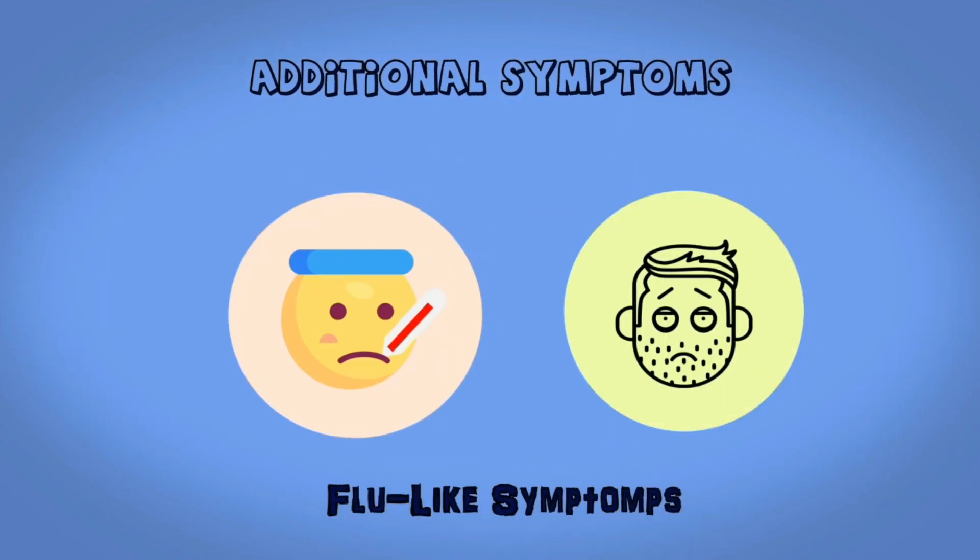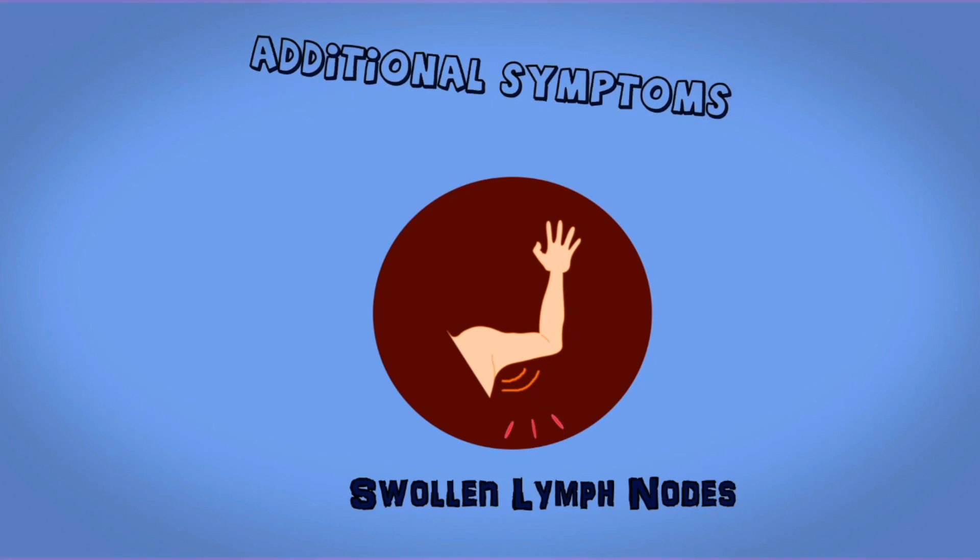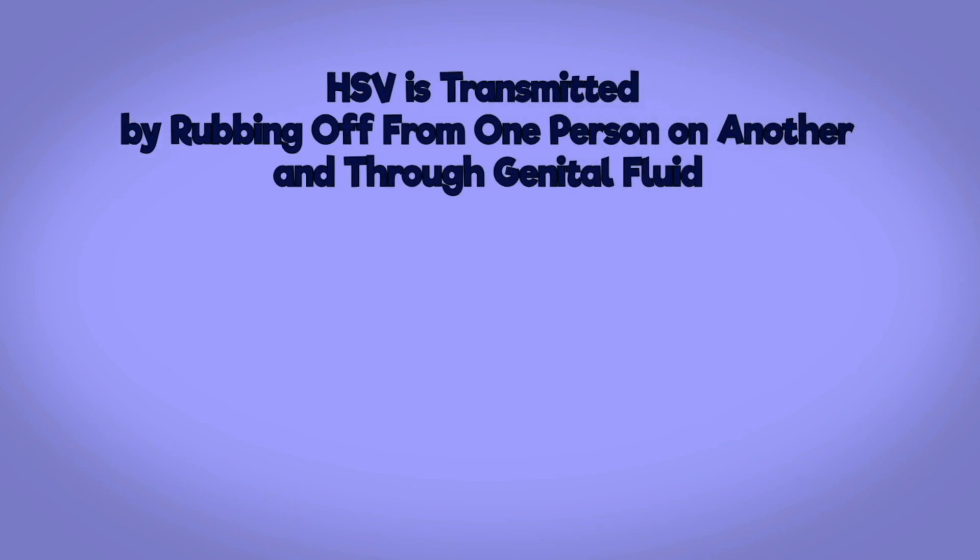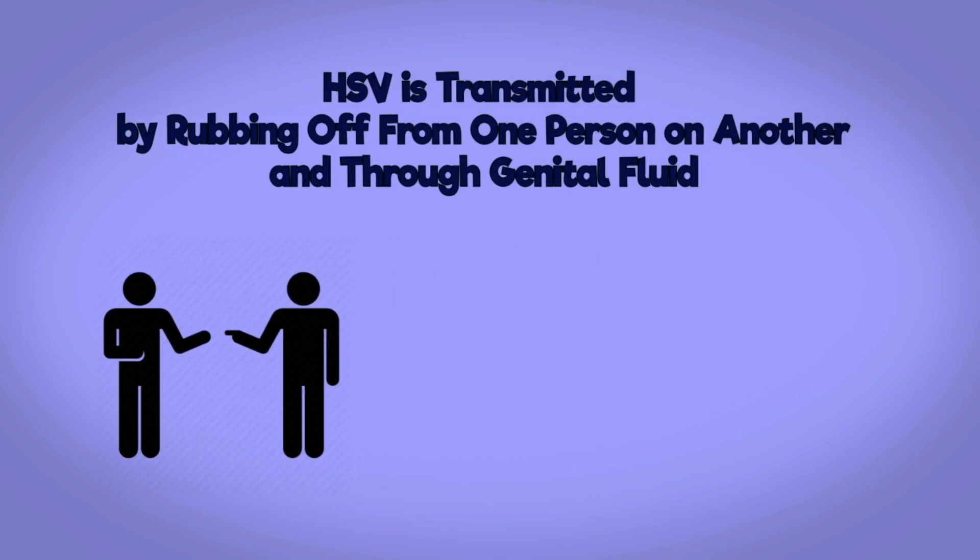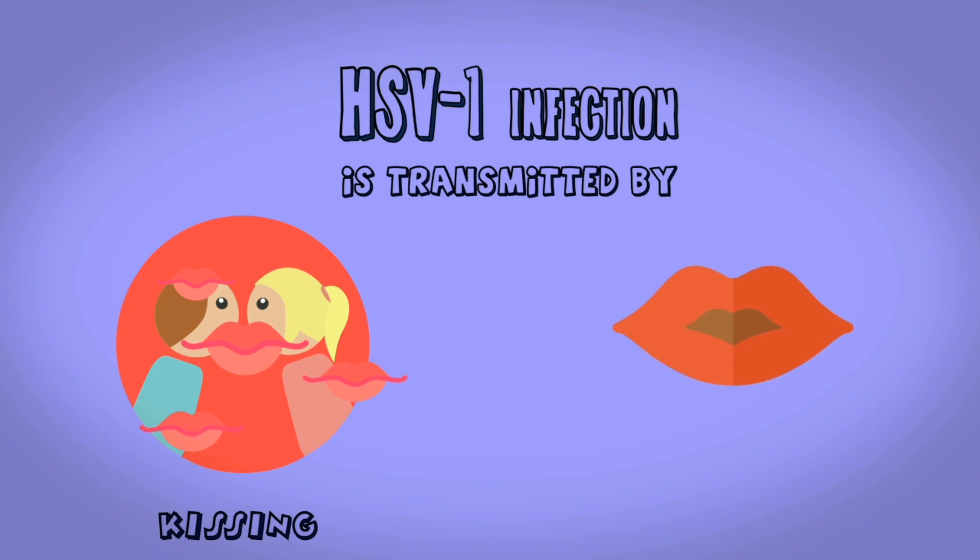How is the transmission? HSV is transmitted through direct contact by rubbing off from one person on another and through genital fluid. HSV-1 is usually transmitted by kissing during oral sex, which makes the virus transmitted to genitals.